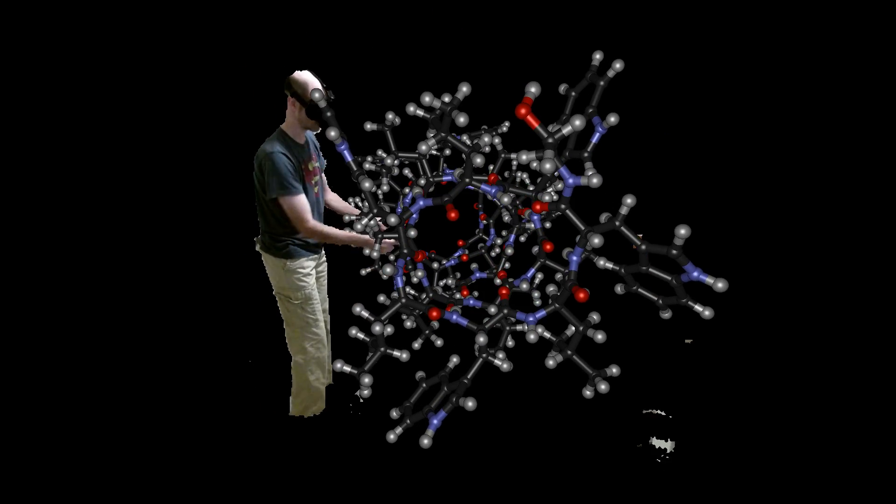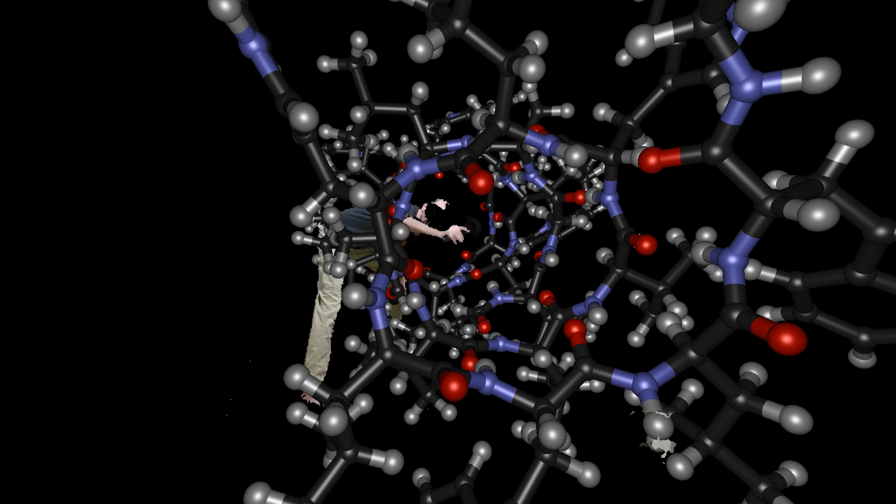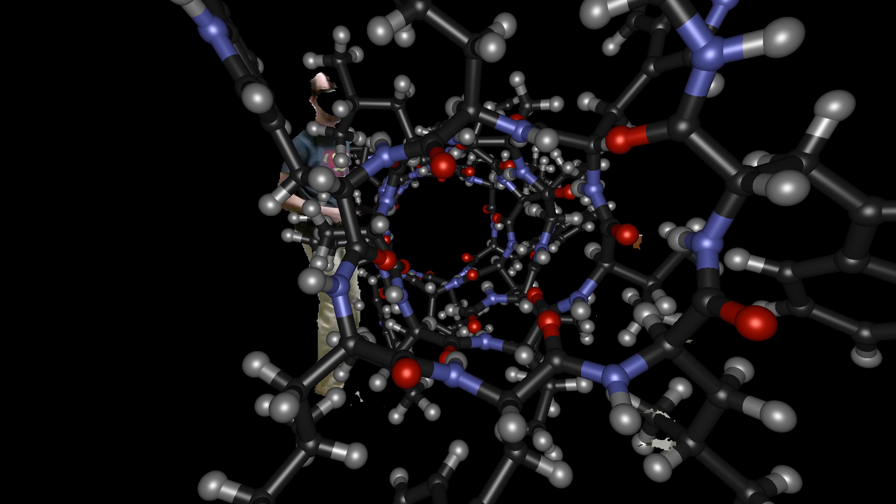This is a protein. You can see there's a channel going down through this helix in the middle. If you look through here, this is the channel. So this is an ion channel protein. This is what lives in a cell membrane and funnels ions from the outside to the inside of the cell.